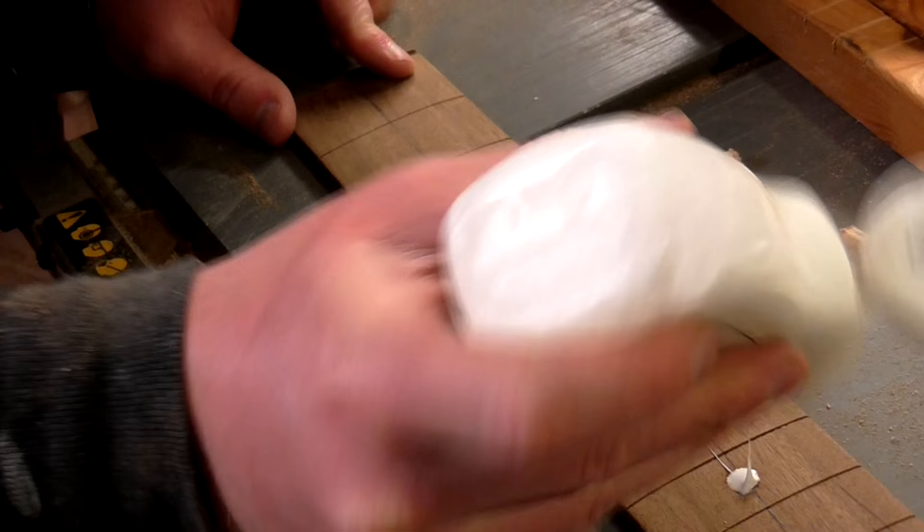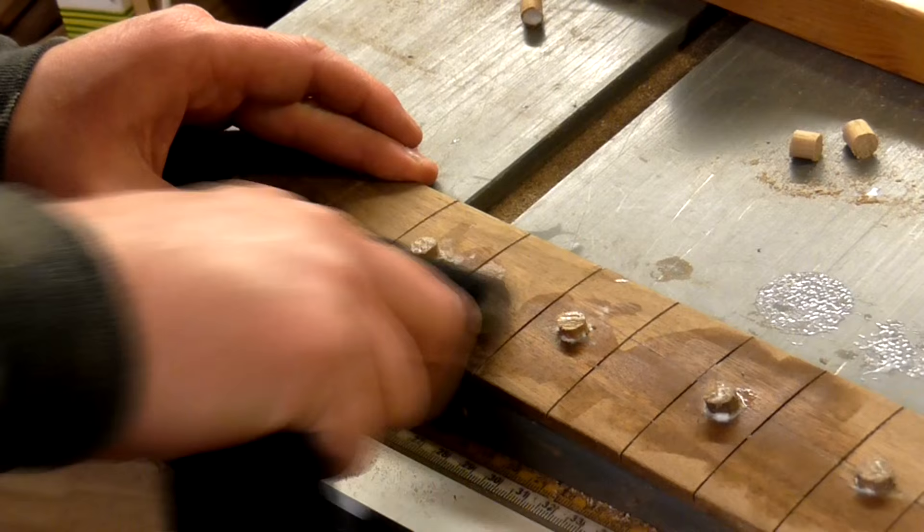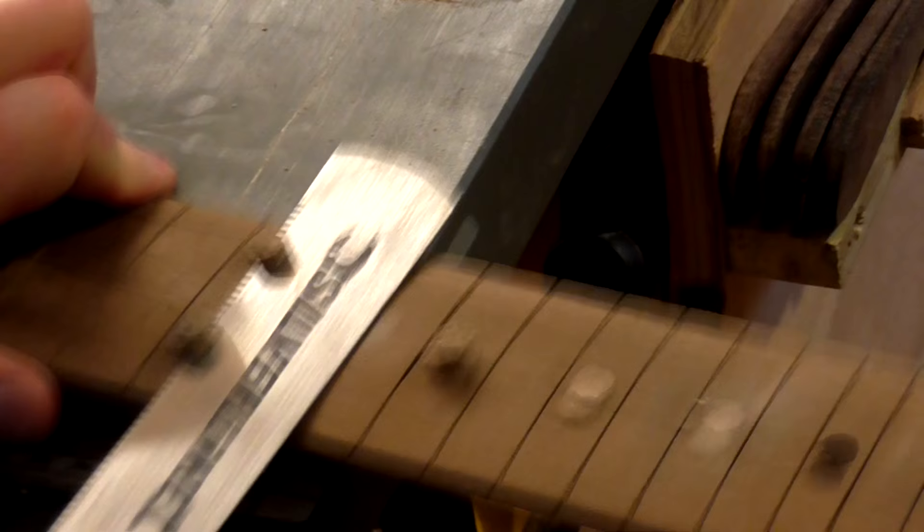Some of them were quite a tight fit but my mallet helped to seat them properly. When the glue had dried I used a flush cut saw to take off the ends and then I sanded them all flush with the random orbit sander.